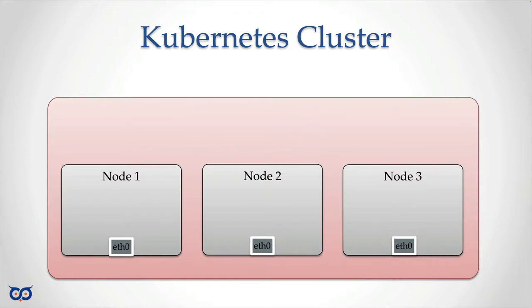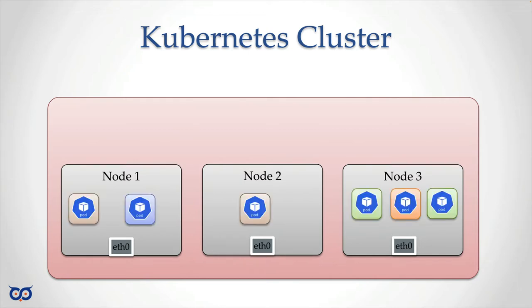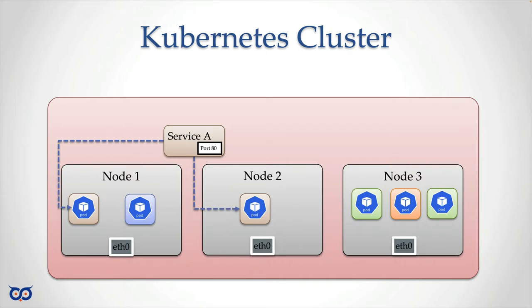We know that we're going to have some nodes in my cluster, and they have network interfaces that allow them to talk to each other. Because we're talking about Kubernetes we care about pods, so we have pods running, and of course we want a service. Let's say we have service A running on port 80, so service A is going to be responsible for load balancing between those two pods. We might have a service B, and remember each service has its own IP address.